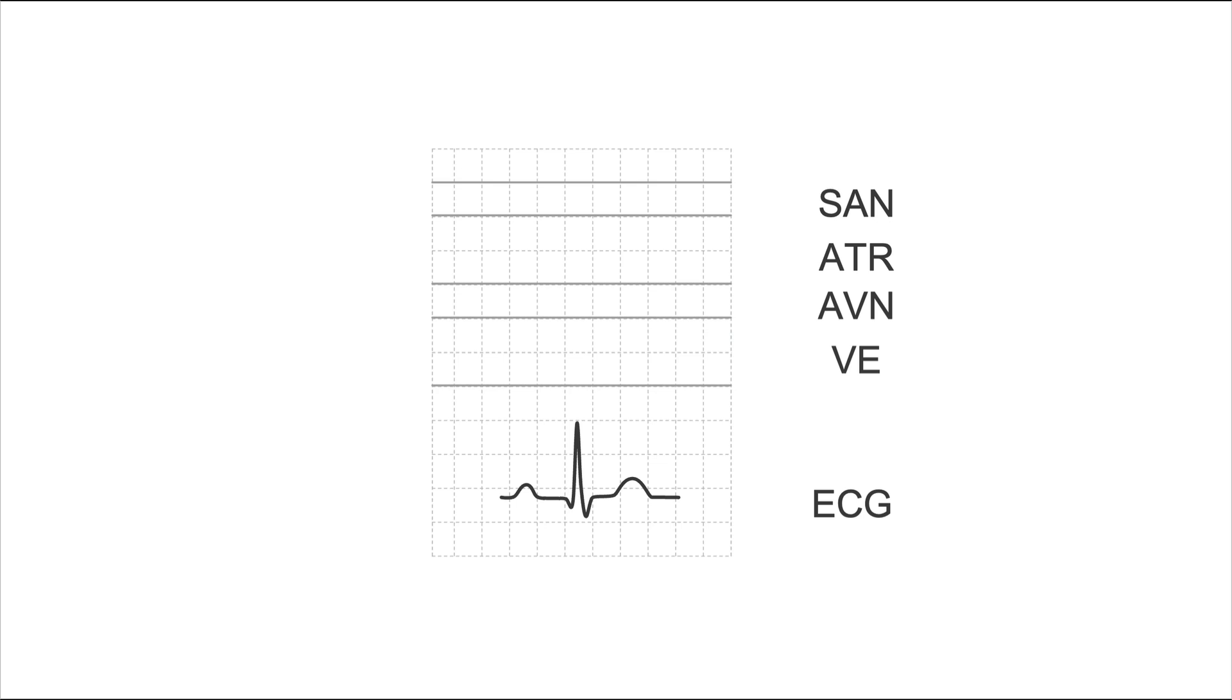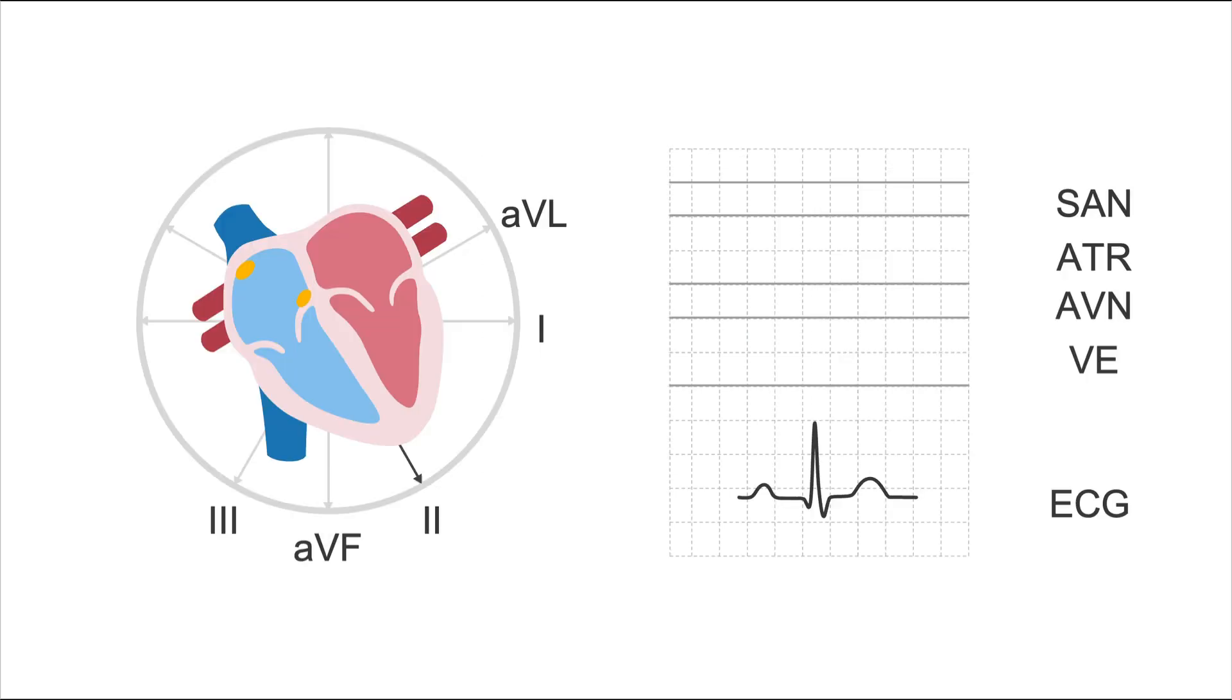This is simple in theory. And we can follow the movement of electricity throughout the heart using this ladder diagram. The ladder diagram visually depicts the initiation of the electrical impulse at the sinoatrial node, or SA node normally, followed by its propagation through the atria, or ATR in this case, the atrioventricular node, or AVN, and finally the ventricles, labeled as VE. So when the SA node depolarizes, which is usually the first thing to depolarize in a healthy heart, we see this yellow dot on our ladder diagram.